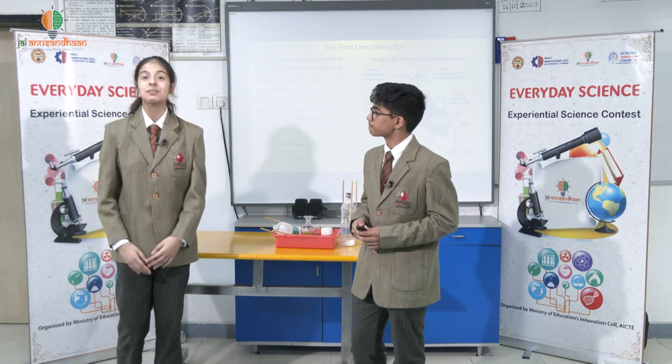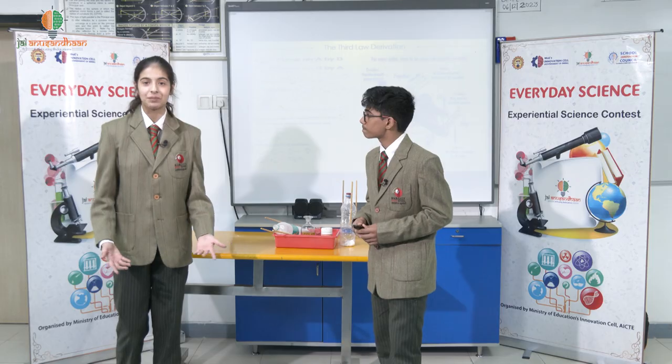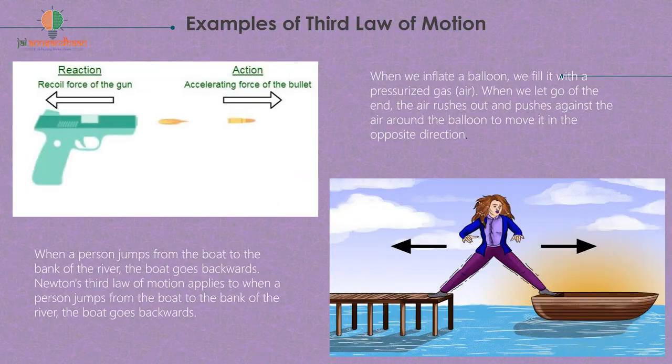Another example can be the recoil of a gun. When a gun shoots a bullet, it applies a forward acceleration on the bullet. The bullet in turn applies a backward force on the gun which causes it to recoil. This forms an action-reaction pair.